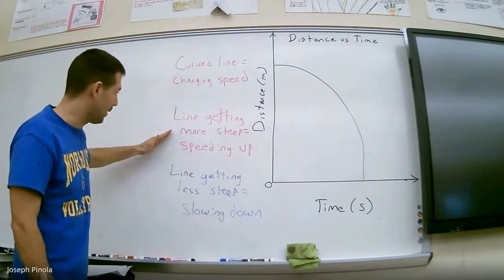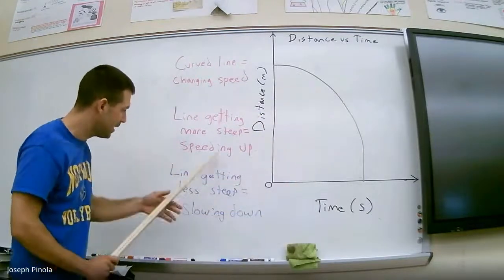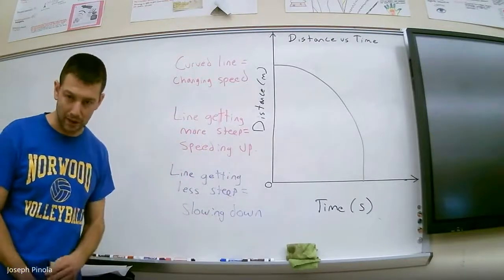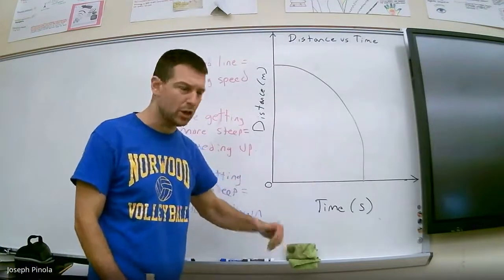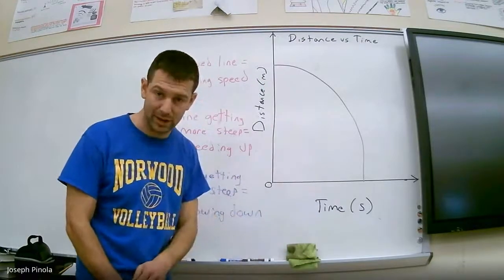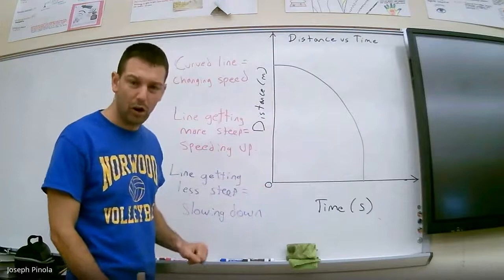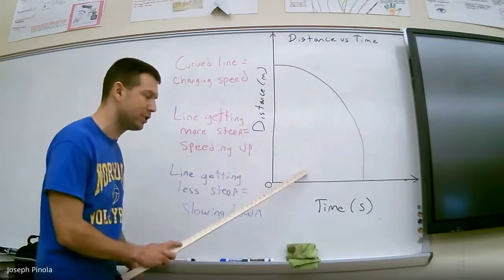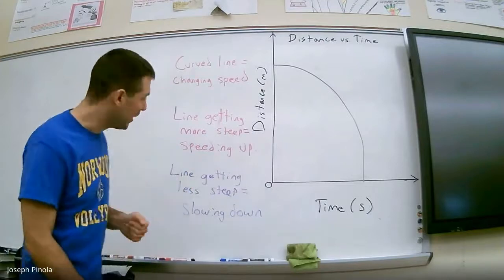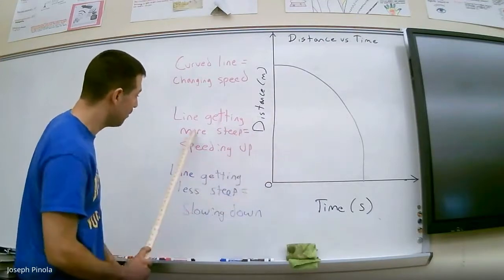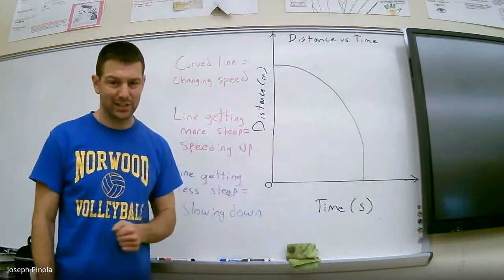Let's look at our rules. First off, we have a curved line, which means whatever object made this graph was definitely changing its speed — not moving at constant speed. Now, was the line getting more steep? Indeed it was, getting steeper over time, which means this object is speeding up. You might say, doesn't it look like the line is going down? Shouldn't that mean the object is slowing down? Well, that's not true. Even though it looks like the line is going down, all that means is that the distance is getting closer to zero — the object is moving back closer towards the origin. Since it is a curved line getting more steep, the object is moving back toward the origin and slowly getting faster as time goes on.